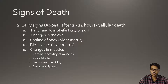Early signs include changes which appear after 2 to 4 hours, mainly the cellular death of the body. First, there is pallor and loss of elasticity of skin. Changes in the eye. Cooling of the body, also called algor mortis. Post-mortem lividity, post-mortem hypostasis, also known as livor mortis.